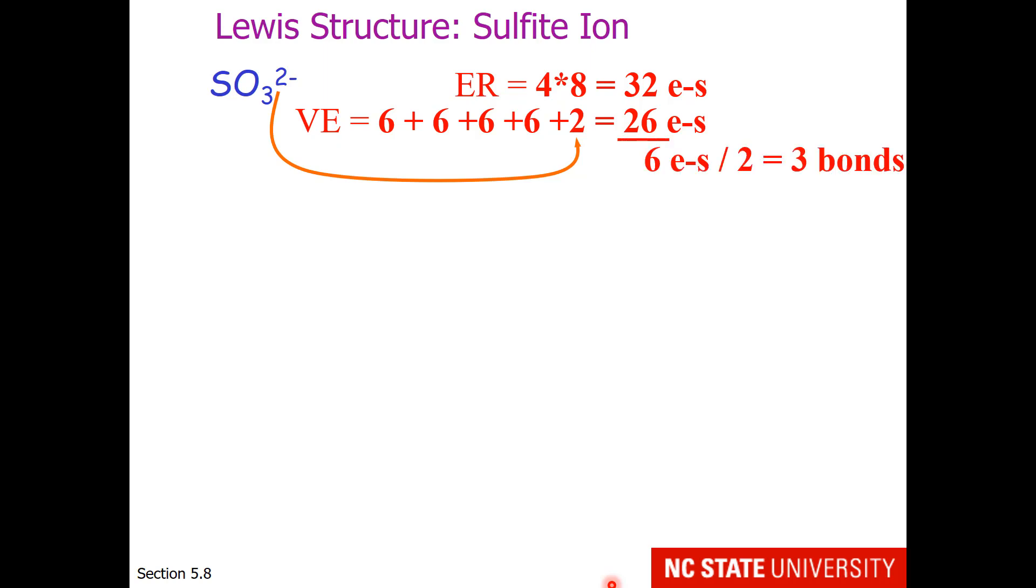When we subtract 26 from 32, we wind up with 6 electrons used in 3 bonds. 26 minus 6 gives us 20 electrons, which when divided by 2 gives us 10 lone pairs. So sulfur will go in the middle with the oxygens around the sides. There are our 3 bonds. Oxygen has 1 bond, so it needs 6 additional electrons around each oxygen. So each oxygen has access to an octet of electrons. Sulfur has 3 bonds, so we will need 2 more electrons to give sulfur access to 8 electrons.